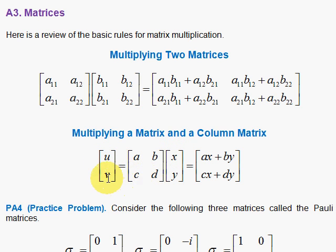And to get the lower value of this column vector, we take the CD, turn it sideways, smack it against here, C times X plus D times Y. And there you have it. U equals A X plus B Y. V equals C X plus D Y.